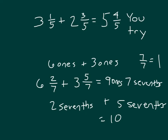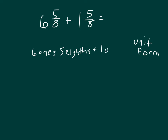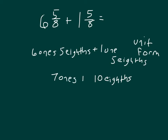Here I have the question: six and five eighths plus one and five eighths. Thinking about these in unit form, we have six ones along with five eighths for the first mixed number, and one one along with five eighths for the second. Adding the eighths first: five eighths plus five eighths is ten eighths. Six ones along with one more one is seven ones. Written as a mixed number, that's seven ones along with ten eighths.